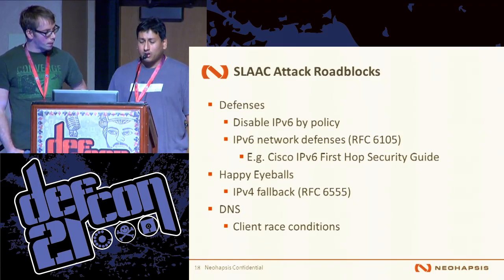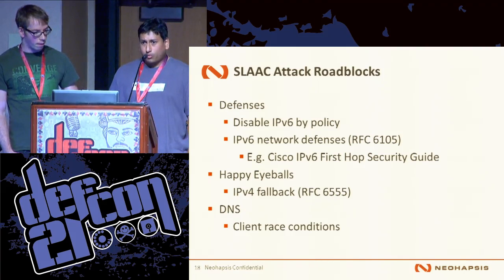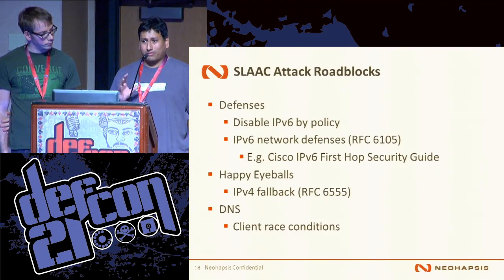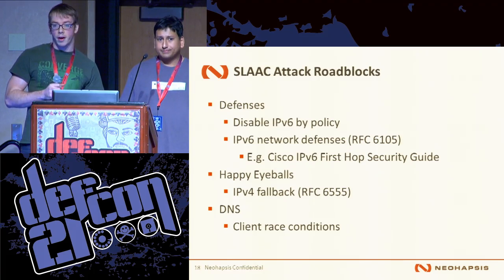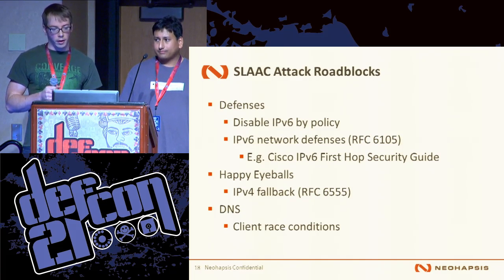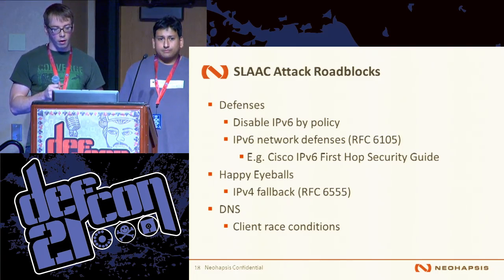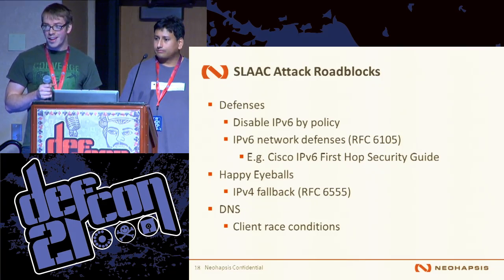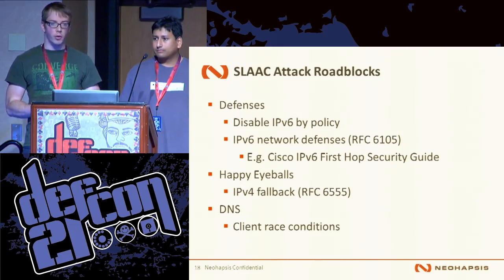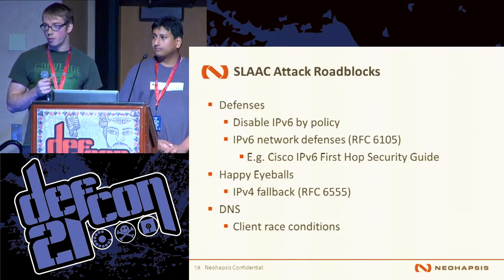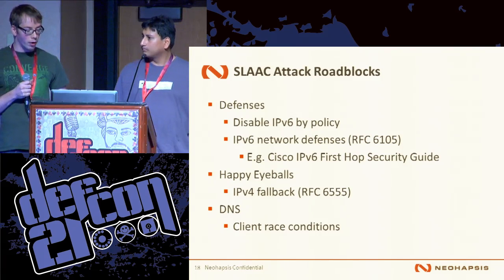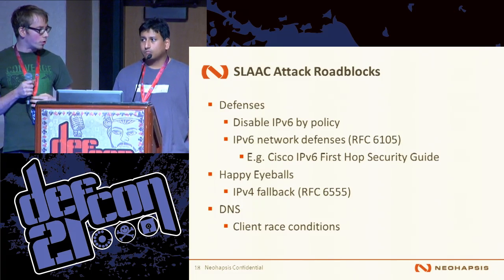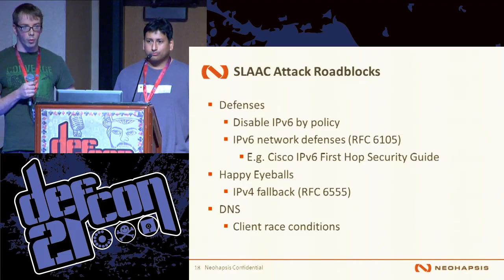Some other issues we've run into in the lab are different operating systems implementing RFC 6555 differently, which specifies heuristics for when the OS will roll back to IPv4 if IPv6 connectivity isn't coming back fast enough. The happy eyeballs effect on Ubuntu is different than on macOS, different than on other flavors of Linux. Unfortunately, when the fallback happens it seems to then just prefer IPv4. If you're on a latent network and hosts drop back to IPv4, there's a good chance they're not going to route through your host again. So we suggest if you're going to run this attack, have good network connectivity — don't be doing this over a latent wireless network.